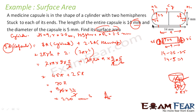What we have done: we first broke the capsule into a cylinder and two hemispheres. Then we found the height and radius of the cylinder and the radius of the hemispheres. Observing the figure carefully, we found we just need to add the curved surface areas of the cylinder and the hemispheres. Adding those gives a total surface area of 220 mm².